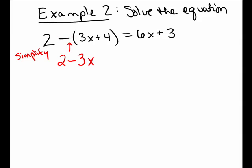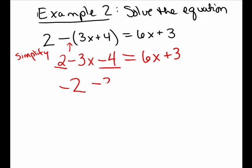I am only distributing the negative, which is the value right in front of the parentheses. If you like, you could think of that as negative 1 in front of your parentheses. So I distribute the negative to the 3x, making subtract 3x, and I distribute the negative to the 4, meaning subtract 4. On the right side, everything is simplified, so I leave it as 6x plus 3. On the left side, I gather and combine like terms: 2 subtract 4 is negative 2, and I still have a minus 3x.